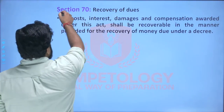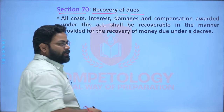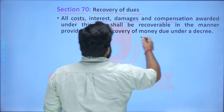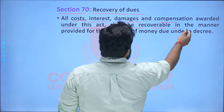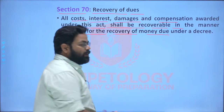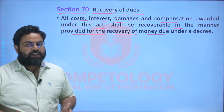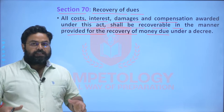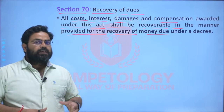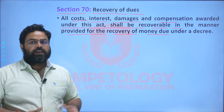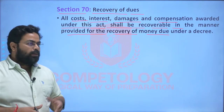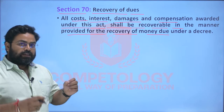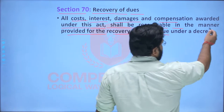Section 70 deals with the recovery of dues. All costs, interests, damages, and compensation awarded under this act shall be recoverable in the manner provided for the recovery of money due under a decree. So if a village headman files a complaint to the DC that a person is not paying land rent, after due inquiry and hearing both parties, the DC approves a method by which the land revenue should be recovered from that particular rayat, following the method already delineated in the decree.